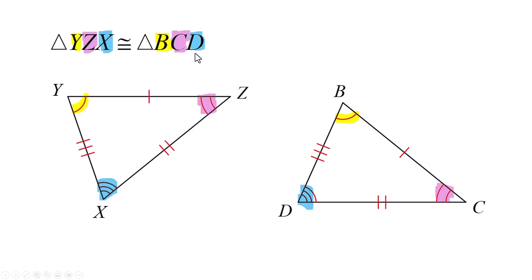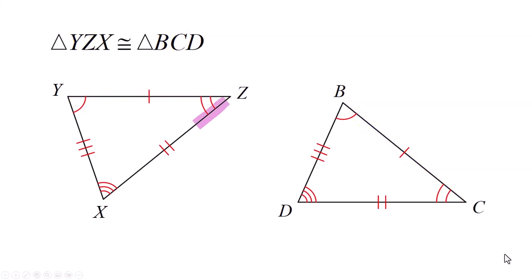Now let's look at the sides. YZ has one mark — these two sides are congruent to each other. In the congruency statement, Y to Z corresponds to B to C. Z to X, with two little marks, has to go with C to D, which also has two little marks.